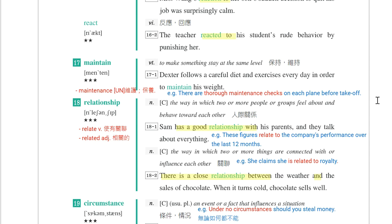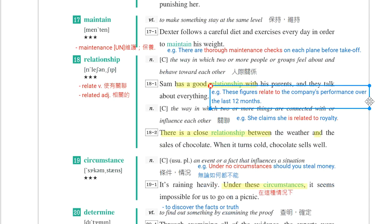第十八个单字是relationship，表示关系、人际关系或关联。例句：Sam has a good relationship with his parents and they talk about everything。他跟他的父母有很好的关系。Have a good relationship with somebody。